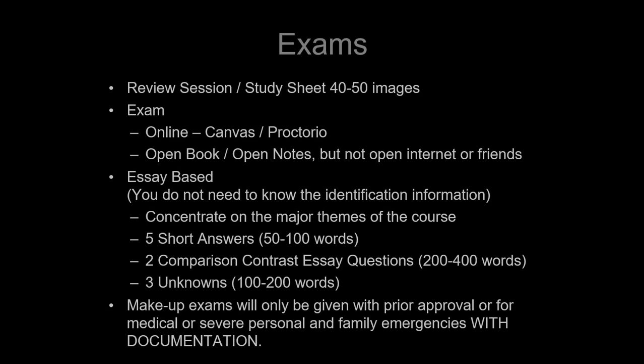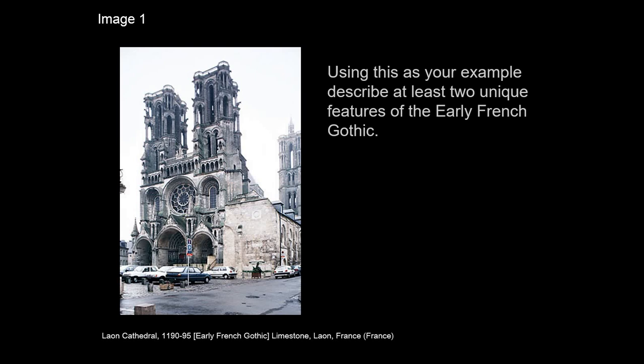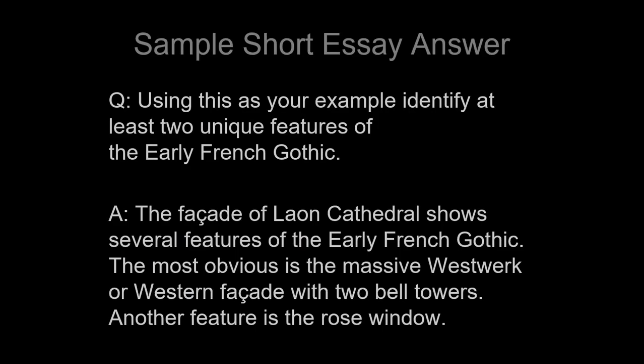Let's take a look at what the exam would look like. It starts off with five short essay questions. I'll show you an image from the study list — you don't have to identify the image, but you should be able to answer a short question in about 25 to 50 words. For example: here is Léon Cathedral — describe at least two unique features of the early French Gothic. An answer would identify things like the West facade, pointed arches, flying buttresses, or rose window. You only have to identify two. There'll be five short essays like that — very pointed, specific, factually based.